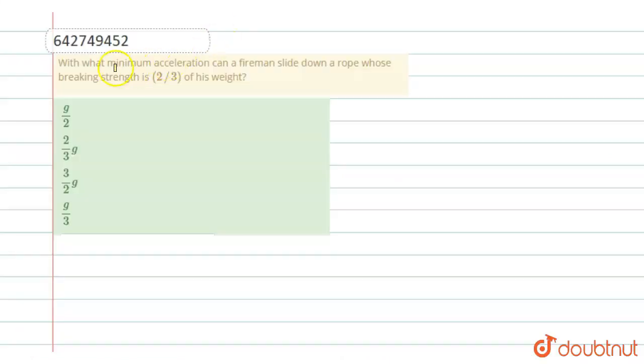Hello students, here is a question. With what minimum acceleration can a fireman slide down a rope whose breaking strength is 2 by 3 of his weight?